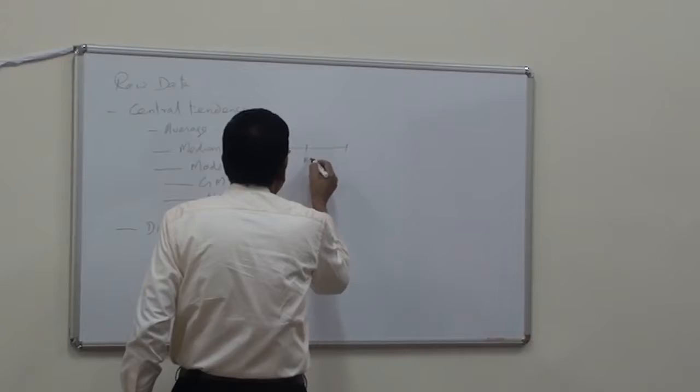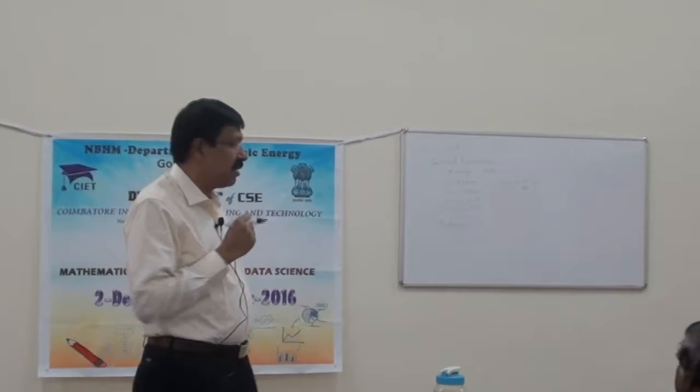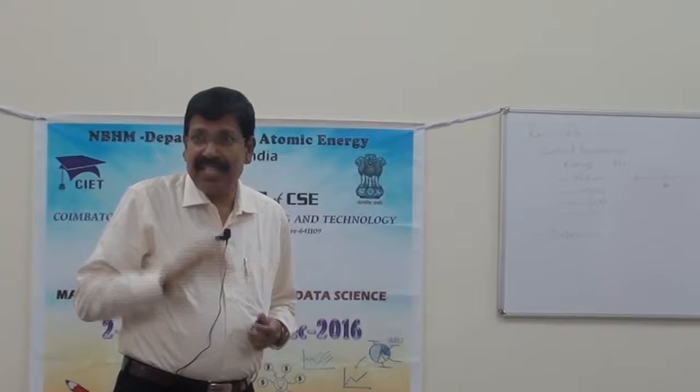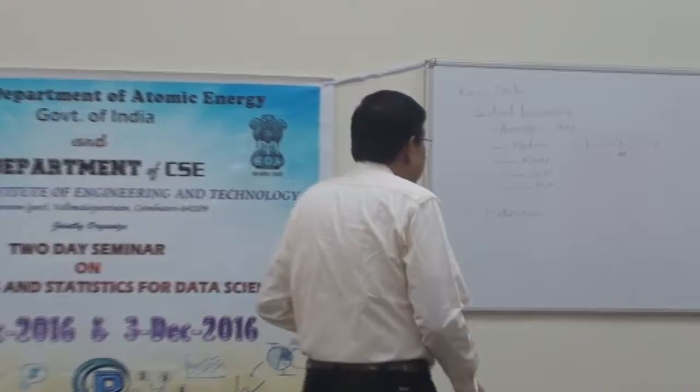This is not coming under central tendency or dispersion; this is called positional averages. A lot of times we use positional averages. Median is a position — it is the middlemost value, below which 50% of the values lie. Suppose there are 100 students: median is the mark below which 50 students have scored and above which the other 50 students have scored. So this divides the whole series into two parts.